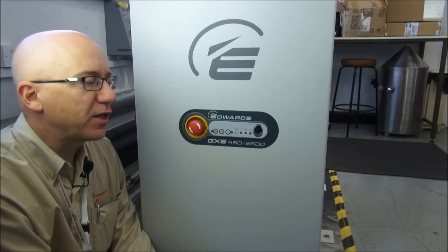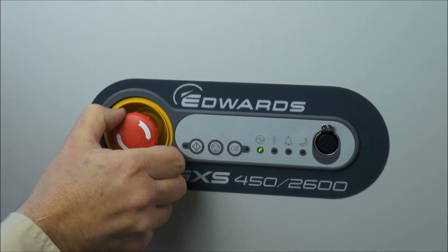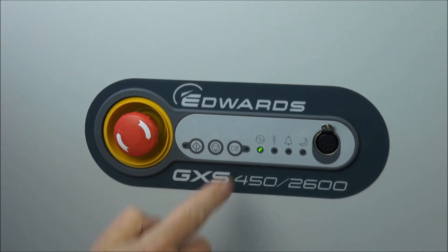So we're ready to start the GXS pump now. Just check that the emergency stop button is disengaged, it's out. And then we're going to start it using the dashboard here. Three important buttons on the dashboard. The control button to take control of the pump. The start button and the stop button.